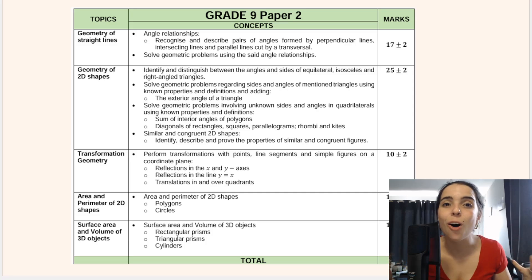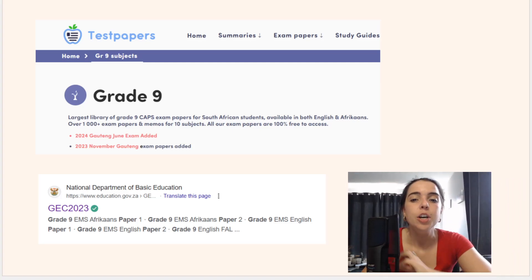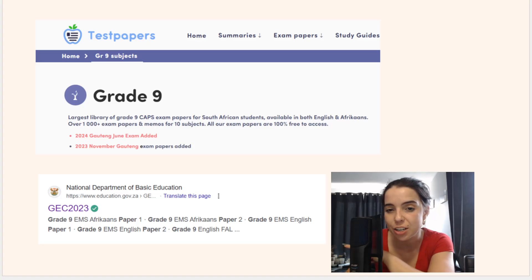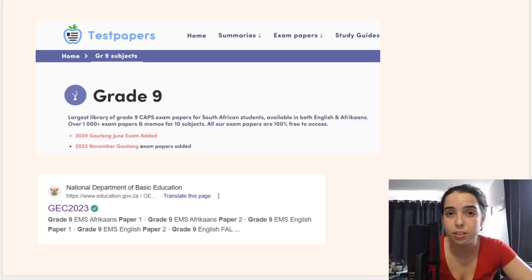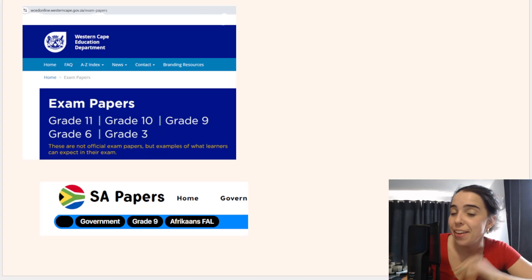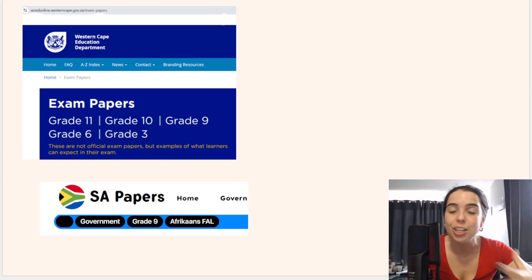Then you have the option of practicing past papers. So the ones that I showed you in this video, I will link down below, but you can access many, many more. And here are some sites where I find some grade nine past papers that are available to you. So we've got testpapers.co.za. They have grade nine, math, also languages and a few other subjects. Then if you are writing the GEC exam, you can head over to the National Department of Basic Education page. Also check out the Department of Basic Education pages for more grade nine resources, as well as the Western Cape Education Department website. They have some awesome grade nine math resources. And then this is SA papers. So just type it in Google. You can get access to a lot of papers as well as their memos, their answers.